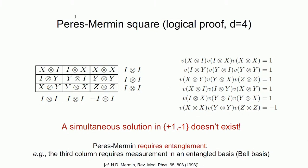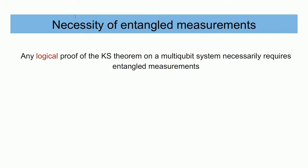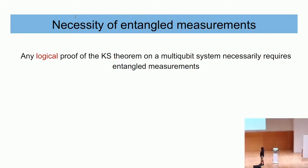This raises the question: is the entanglement in Peres-Mermin accidental or systematic? The first result is the necessity of entangled measurements: any logical proof of the Kochen-Specker theorem on a multi-qubit system necessarily requires entangled measurements. Any construction proving the non-existence of map C on multi-qubit projections must include at least one entangled projection in its domain. You cannot prove it with just product projections.